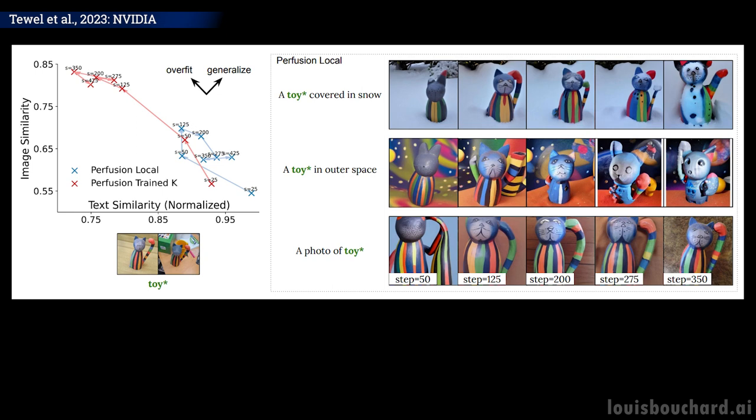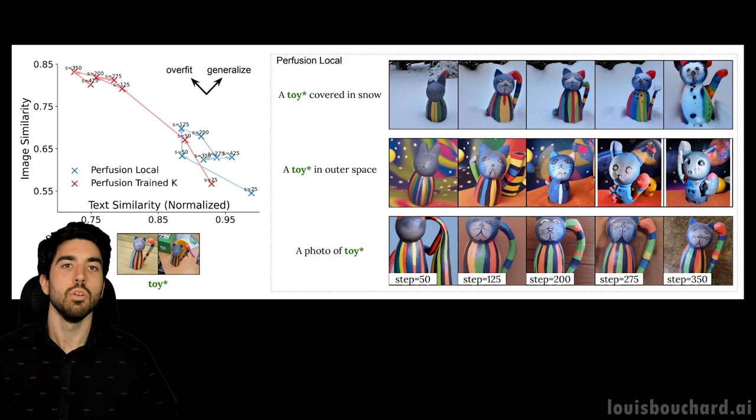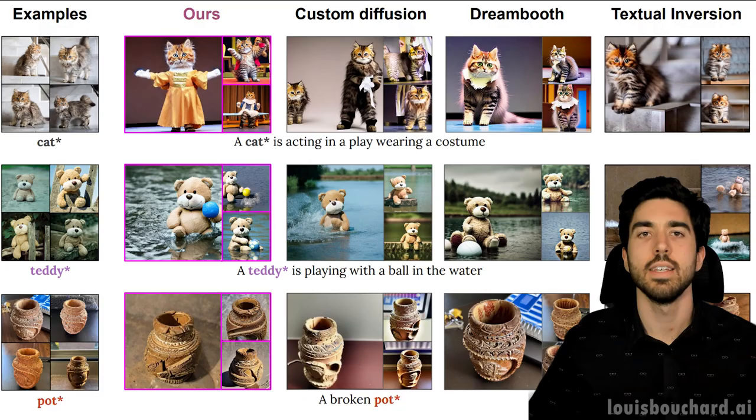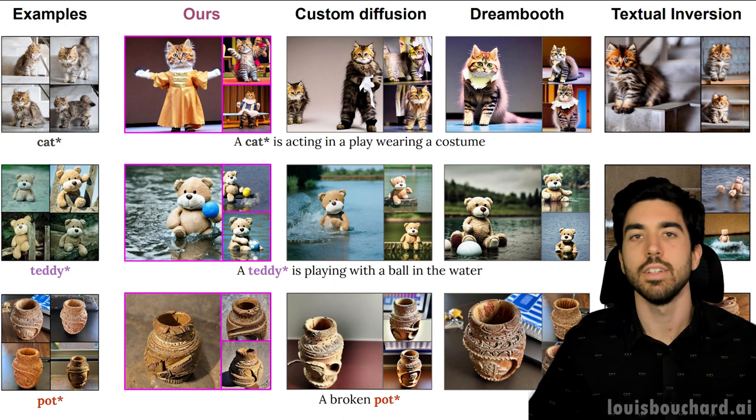It will struggle with keeping the identity of the object we send it, because of the step where we refer to the object as a super category. This sometimes leads to overgeneralization since some super categories are too broad and include many different objects or specific styles that we don't necessarily want. They also mention that combining concepts requires lots of prompt engineering work — another reason to learn how to do better prompting. Still, the results are super impressive and the code will be available shortly. I'm excited to see how it will be used.